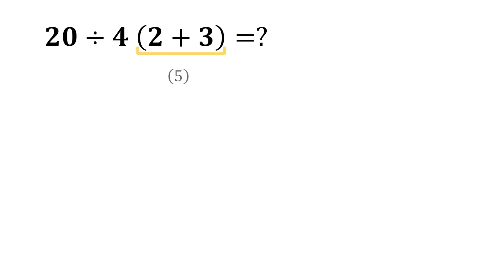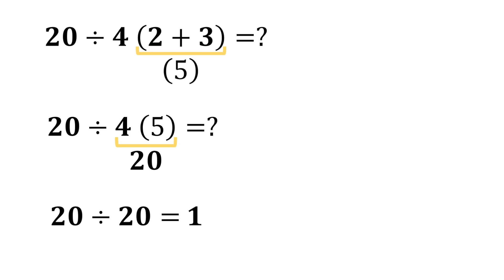2 plus 3 gives us 5, and 4 multiplied by 5 becomes 20. And finally, 20 divided by 20 becomes 1. However,